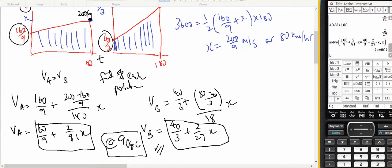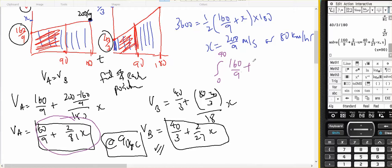Now, what I need to find out is, at 90 seconds, how far had car A travelled, and at 90 seconds, how far had car B travelled? Now, just to show that I can do it differently, for this one, I'm going to do the integral from 0 to 90. I know the equation of that line, because it's this. So it should be 160 on 9, plus 2 on 81, X, DX,